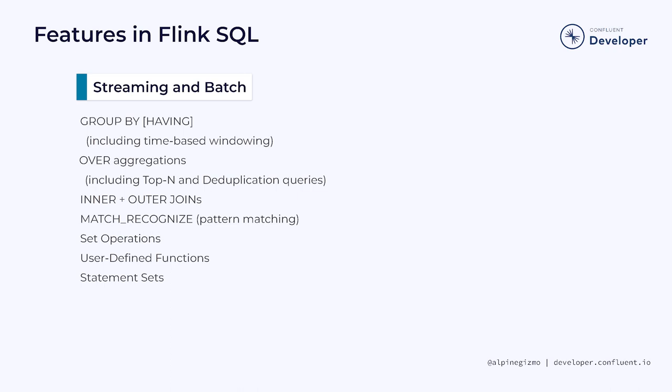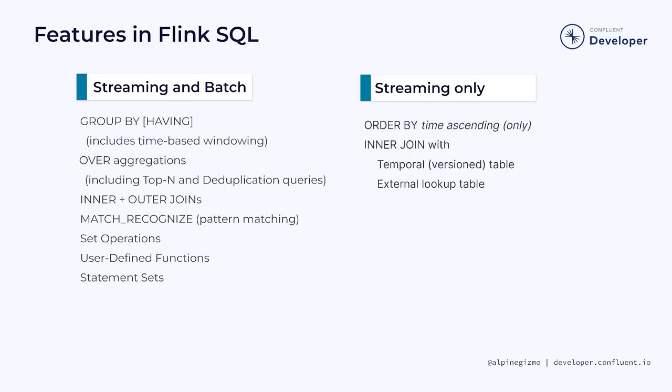Flink SQL is a rather complete implementation of the SQL standard. If you know SQL well, you'll find that Flink SQL includes pretty much everything you might hope to find, and the features listed here are all available for both stream and batch processing. However, there are some interesting differences between the streaming and batch execution modes. In streaming mode, it is only feasible to sort by time — sorting by anything else isn't possible. As for streaming joins, these are special joins that can be executed more efficiently than regular joins.